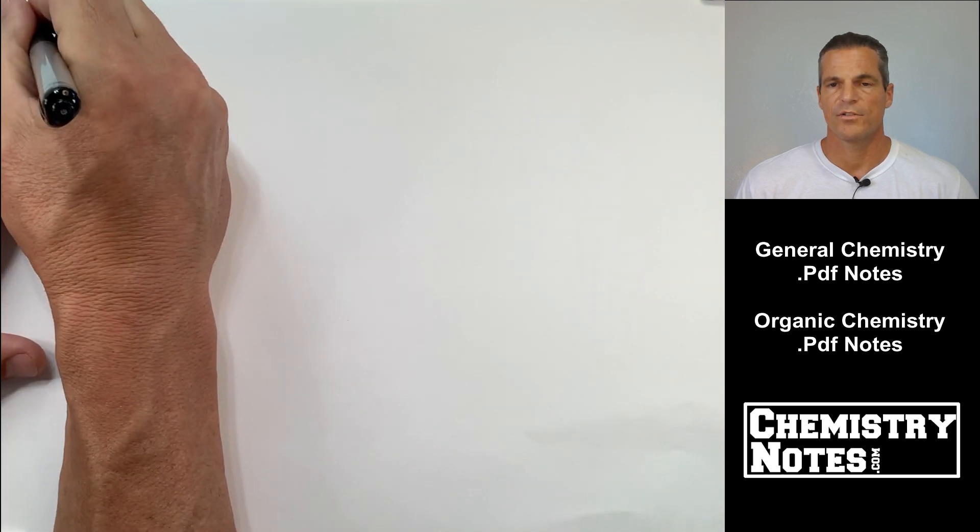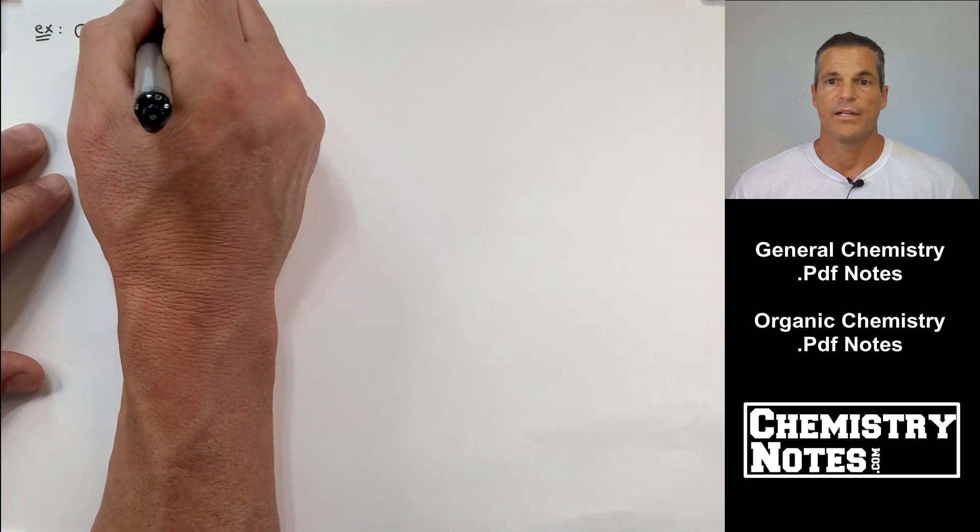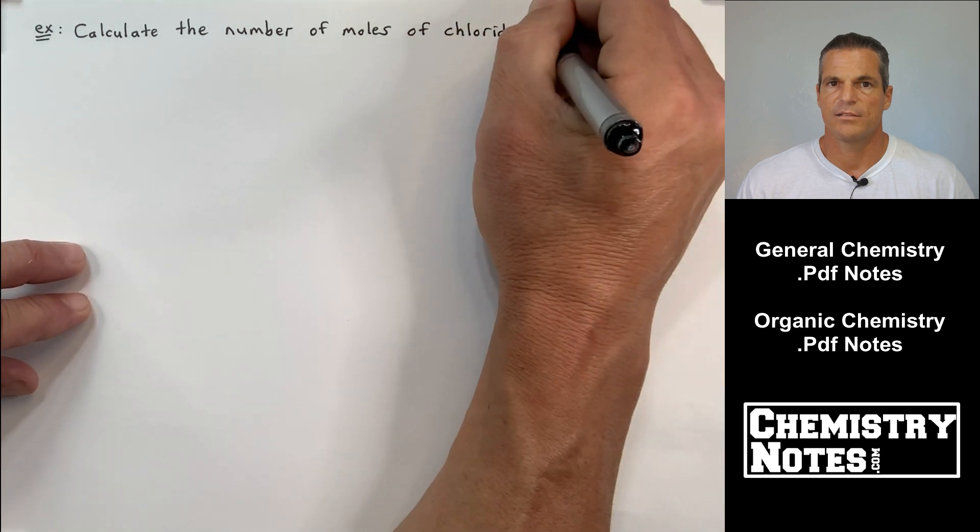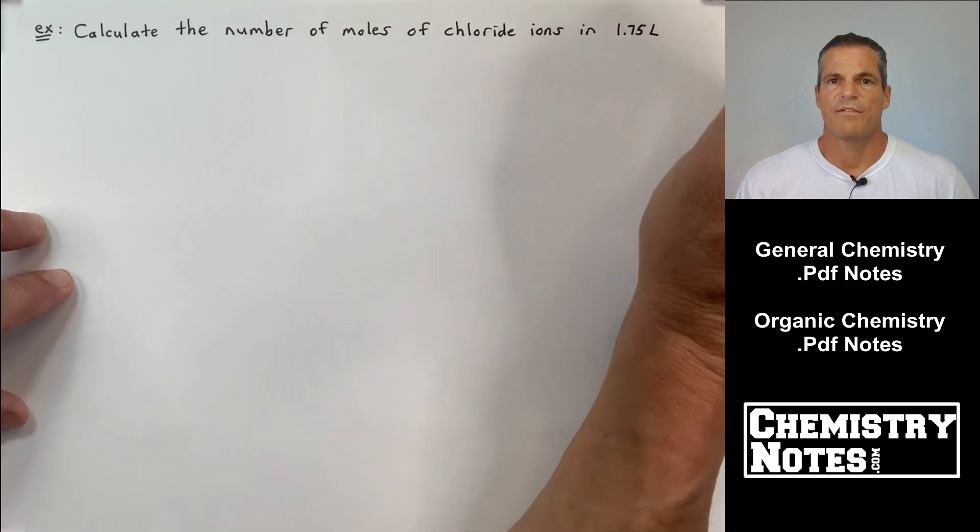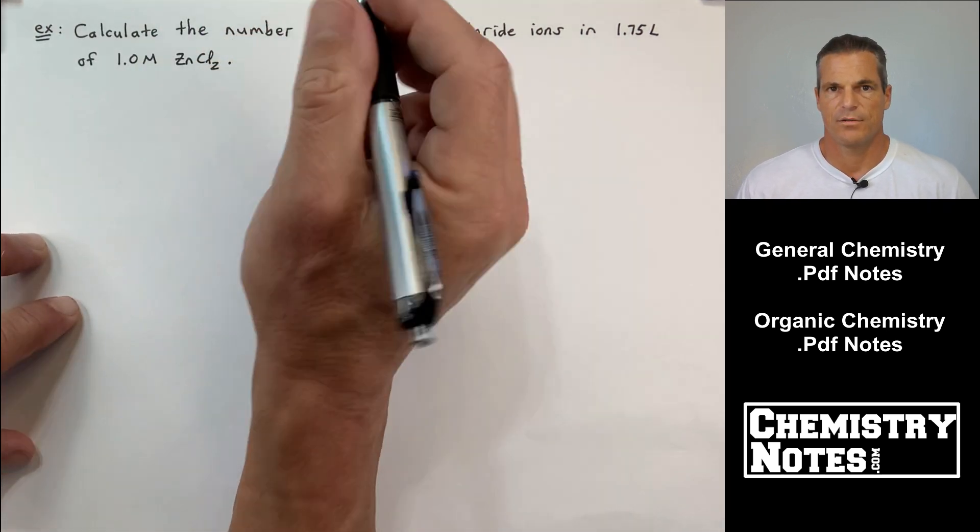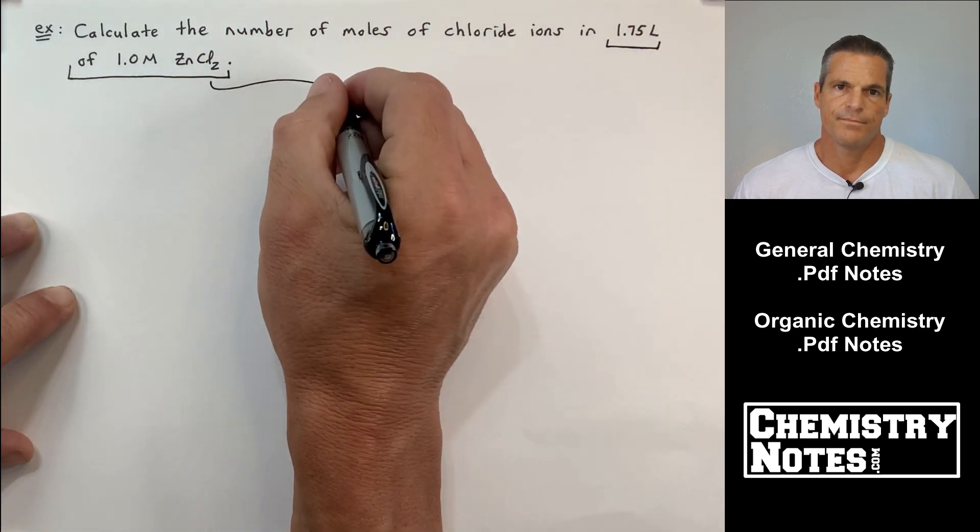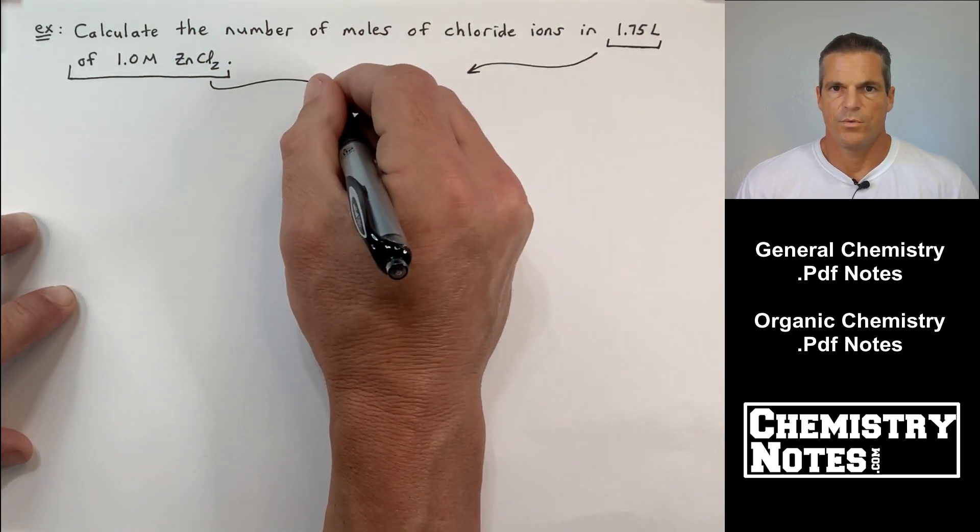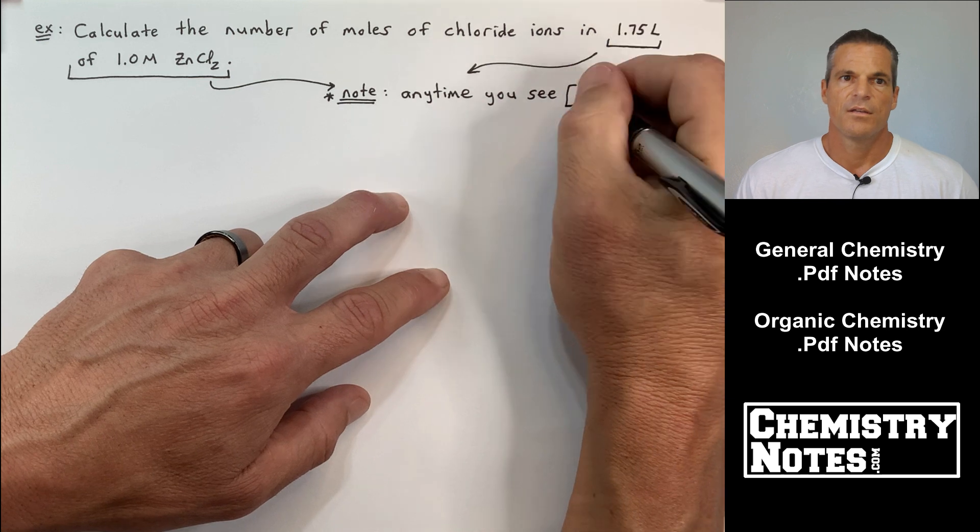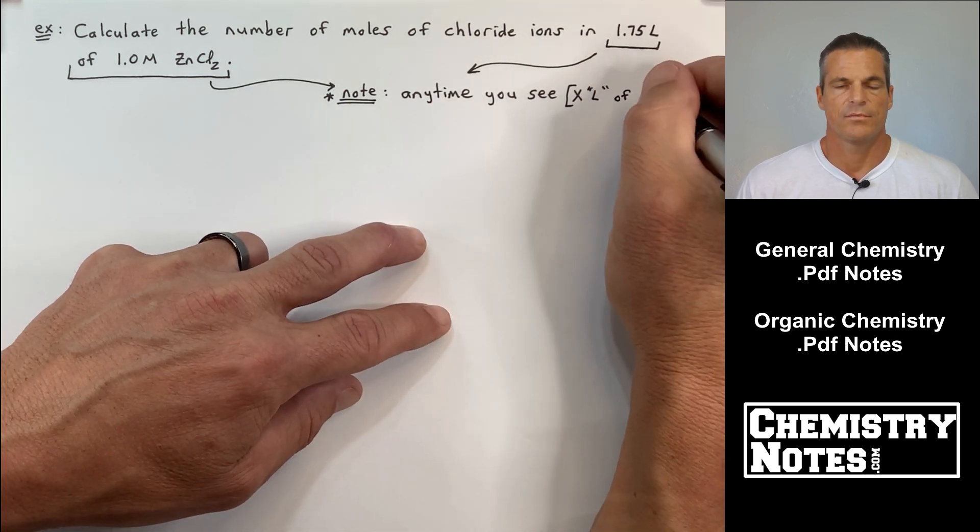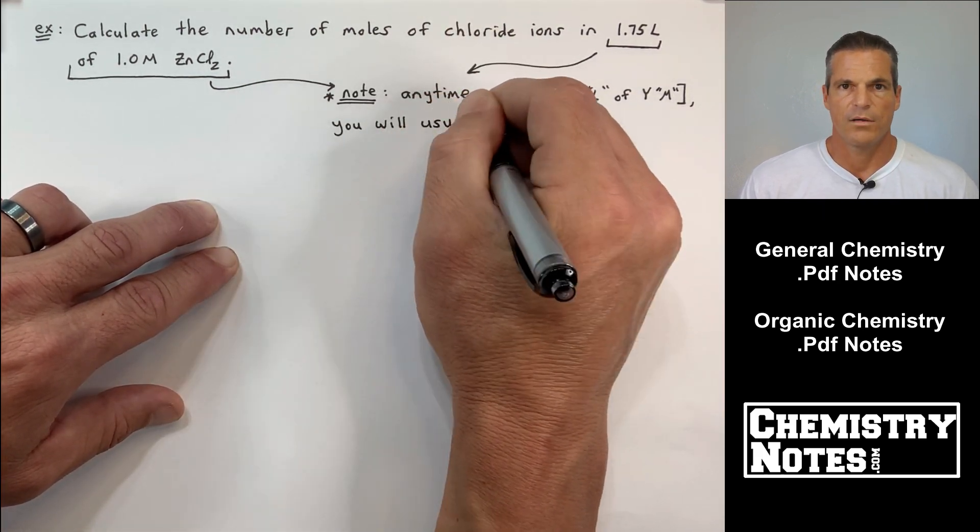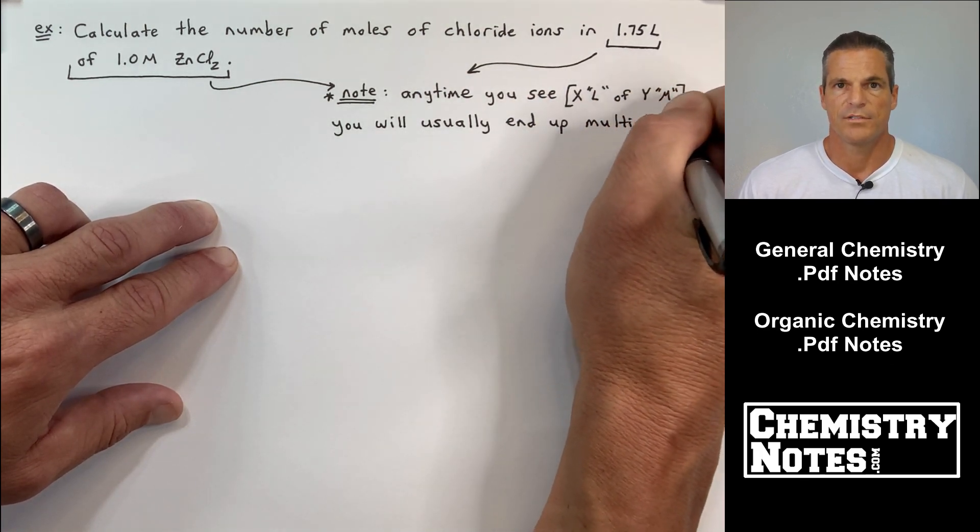All right, so this is our third sample problem for molarity calculations. Calculate the number of moles of chloride ions in 1.75 liters of 1.0 molar ZnCl2. All right, so first of all, so many times you are going to see something like 1.75 liters of 1.0 molar ZnCl2.